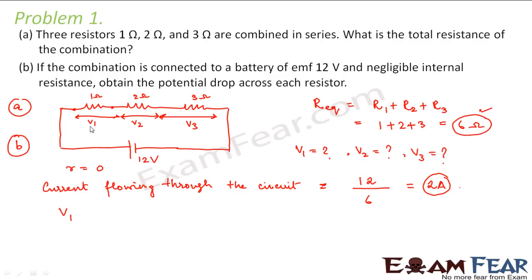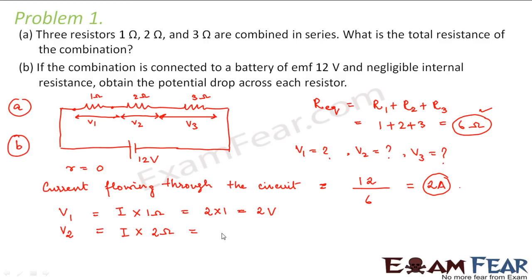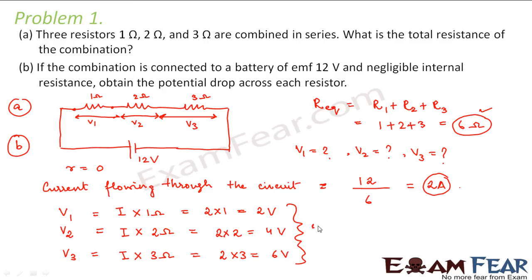Therefore, the voltage drop across the first resistor V1 is current multiplied by resistance: 2 into 1, which equals 2 volts. Similarly, the potential drop across the second resistor V2 is 2 into 2, which is 4 volts. And the voltage drop across the third resistor V3 is 2 into 3, that is 6 volts. So the voltage drops across each of the resistors are 2 volts, 4 volts, and 6 volts respectively.